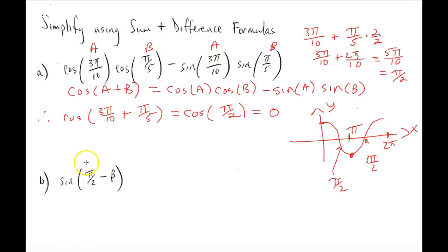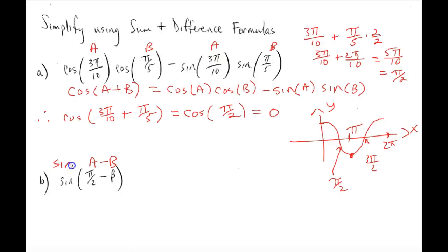Here we have sine of π/2 minus β, and we don't know what β is, but we do know that this fits the profile of sine(A minus B). Sine(A minus B) is going to be sine(A)cosine(B) minus cosine(A)sine(B).